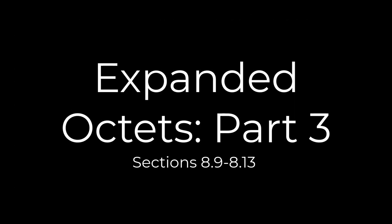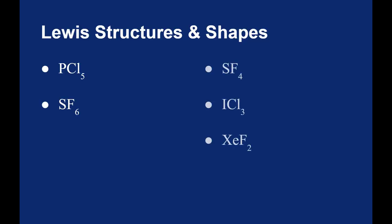Let's continue looking at shapes with expanded octets. We'll take a look at sulfur tetrafluoride (SF4), iodine trichloride (ICl3), and xenon difluoride (XeF2). All three of these are molecules where the central atom has an expanded octet.